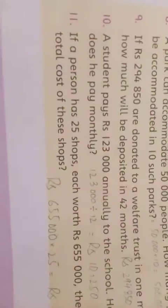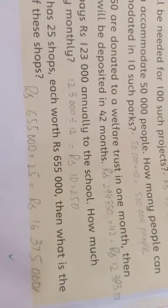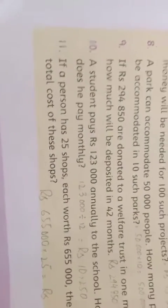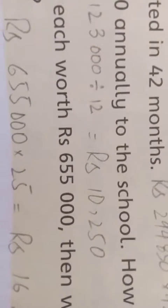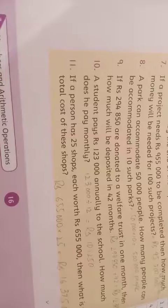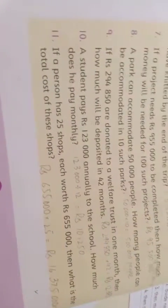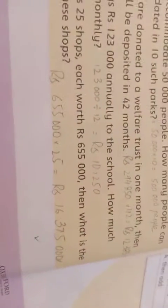Question number 11: If a person has 25 shops, each worth 655,000 rupees, then what is the total cost of these shops? If one shop costs 655,000, what is the total for 25 shops? Obviously, we will multiply 655,000 by 25. The total amount is 16,375,000.